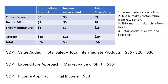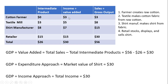Let's do a simple example. We have several stages in production: a farmer, a textile mill, a shirt manufacturer, and a retailer. The cotton farmer grows raw cotton and sells it to the textile mill. We'll assume the farmer has no intermediate products, so the farmer sells that raw cotton for $3. That $3 of raw cotton becomes an intermediate product to the textile mill. The income equals value-added, which is $3 minus $0, so the farmer's value-added is $3.